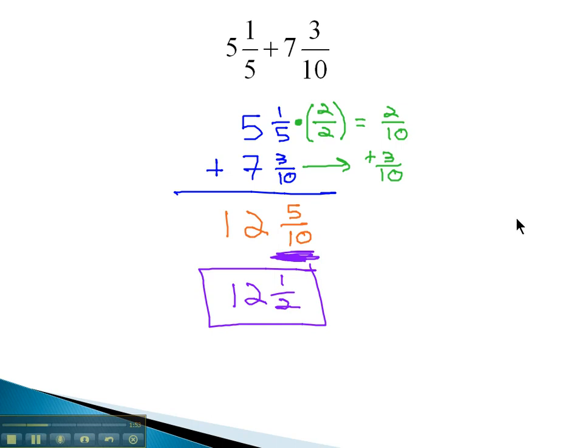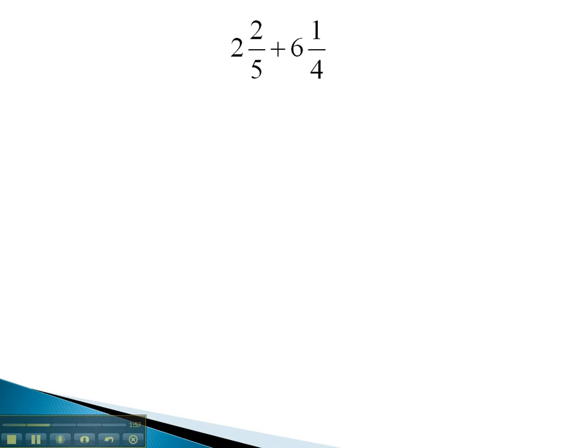Let's try one more example, where we're adding mixed numbers, working right to left. Again, the first step is going to be to line up the mixed numbers, 2 and 2 fifths plus 6 and 1 fourth.